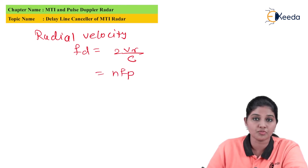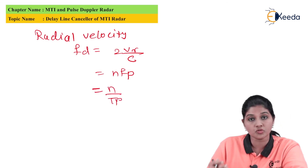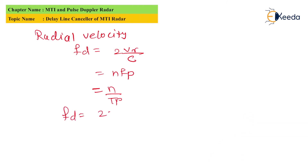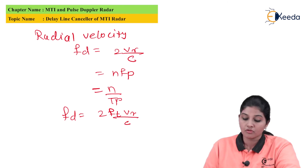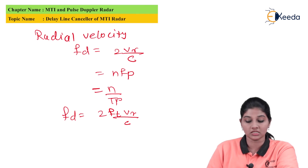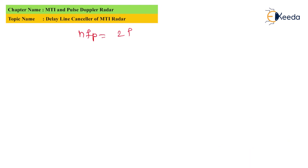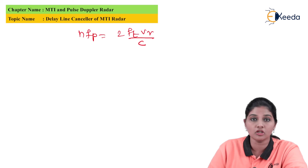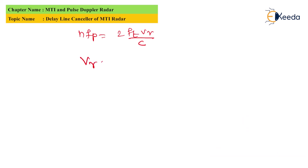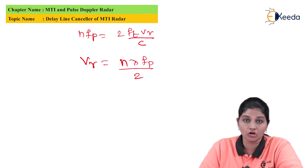The radial velocity of the moving target is given by ft = 2vr/c. With fp replaced by 1/tp, and substituting n·fp = 2·ft·vr/c, we can calculate the value of vr. The first blind speed is: vn = n·λ·fp/2, for n = 1, 2, 3, 4, and so on.